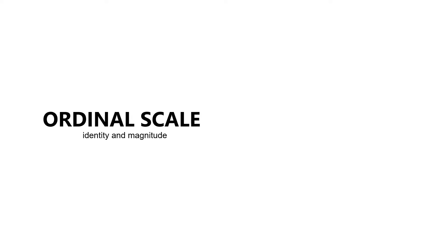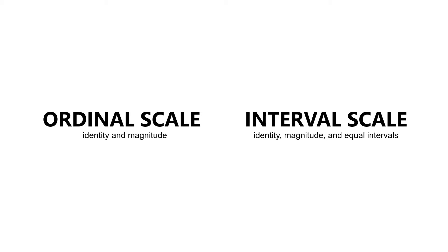The honors rank that assigns each student a number — first honor, second honor, and so on — is measured through the ordinal scale. Here, we only know who obtained greater or lower marks compared to whom, but we do not know by how much. We also do not know the actual marks obtained by anyone unless otherwise stated. Whereas the interval scale of measurement has the properties of identity, magnitude, and equal intervals.